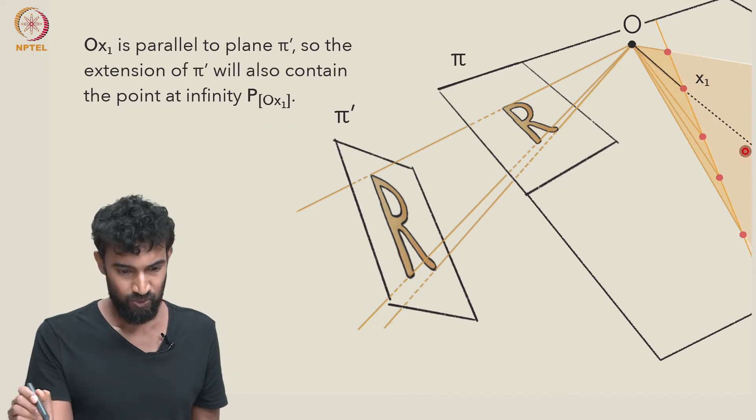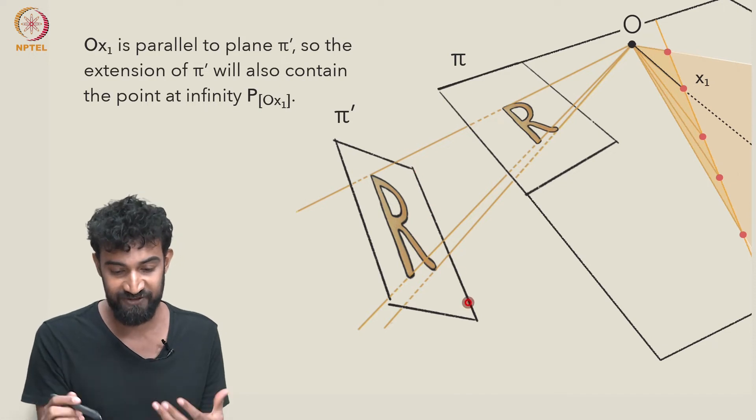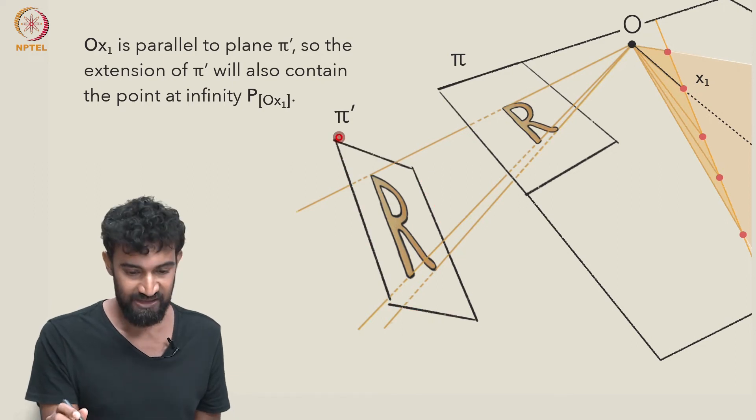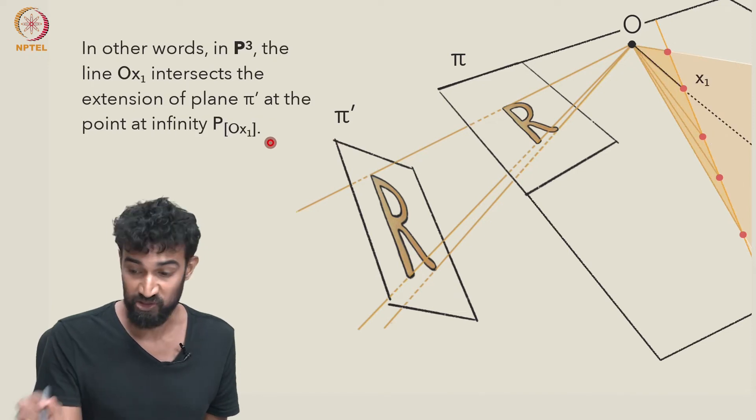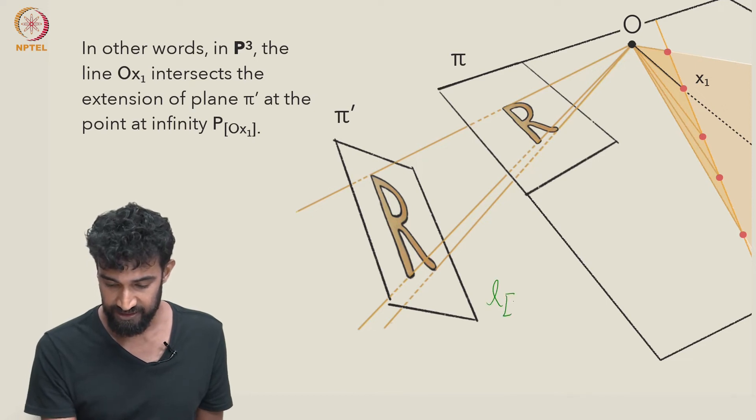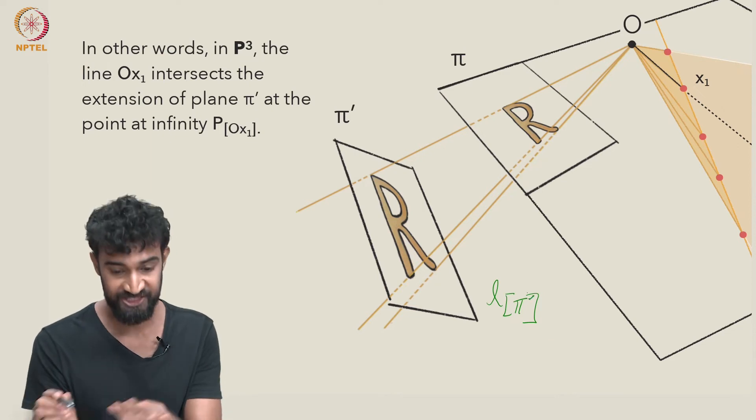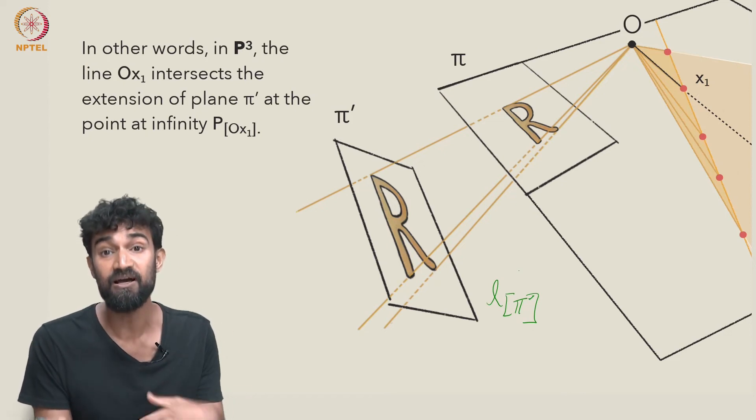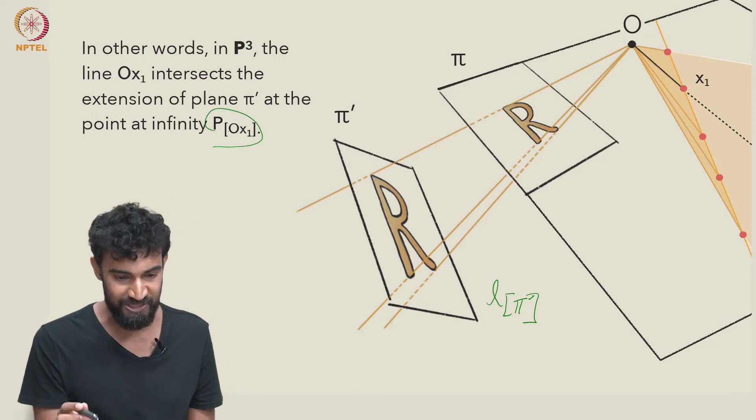Why is that? Well, Ox1 is parallel to π'. And by definition, π' is going to—the line at infinity L_π' that's associated to π' in P3, that's going to consist of all the points at infinity of all the lines parallel to π'. So in particular, it's going to include P[Ox1].